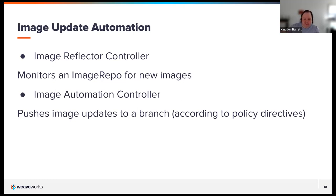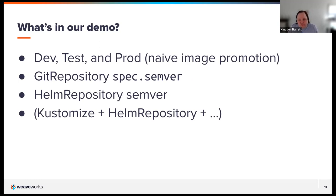The image automation controller then pushes that update to a branch. We'll see that in the demo several times. We'll also see Git repository automation, and the Helm repository semver automation demonstrated as well. If those things aren't clear, don't worry — I just want to give an overview for people more familiar with Flux already so they know what to expect.